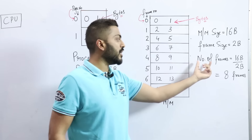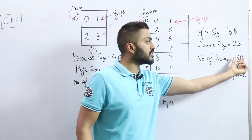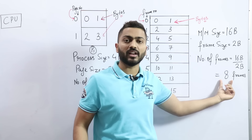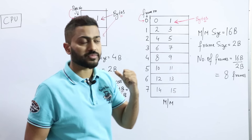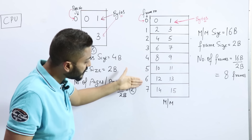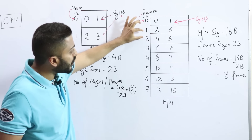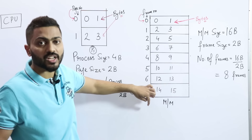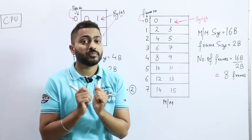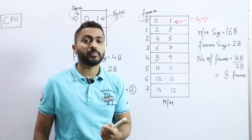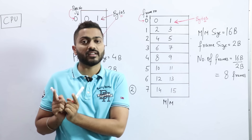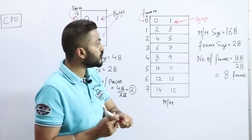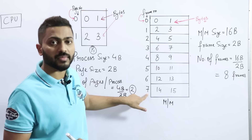How do we calculate the total number of frames? Total memory size is 16 bytes, and one frame size is 2 bytes, so there will be a total of 8 frames. I've already represented them here to save time — frame numbers 0, 1, 2, 3, 4, 5, 6, 7. Always remember: number of frames is 8, but when we number them in binary, like arrays, indexing always starts from 0, so we go from 0 to 7.